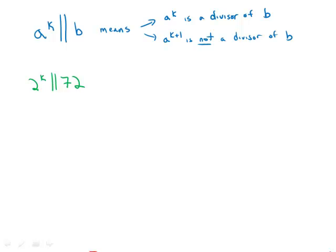If k is a positive integer and 2 to the k double slash 72, then k is equal to which of the following?